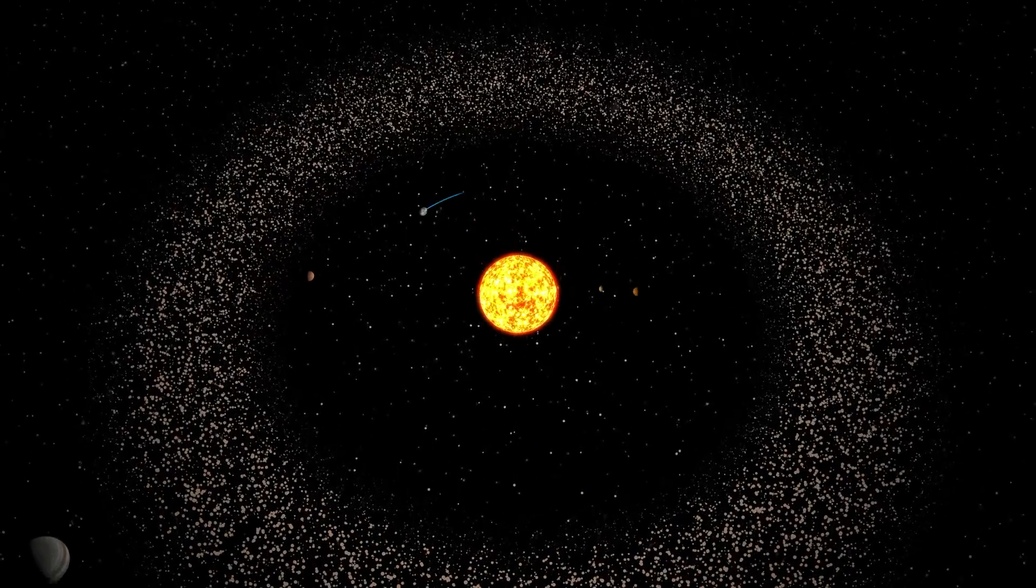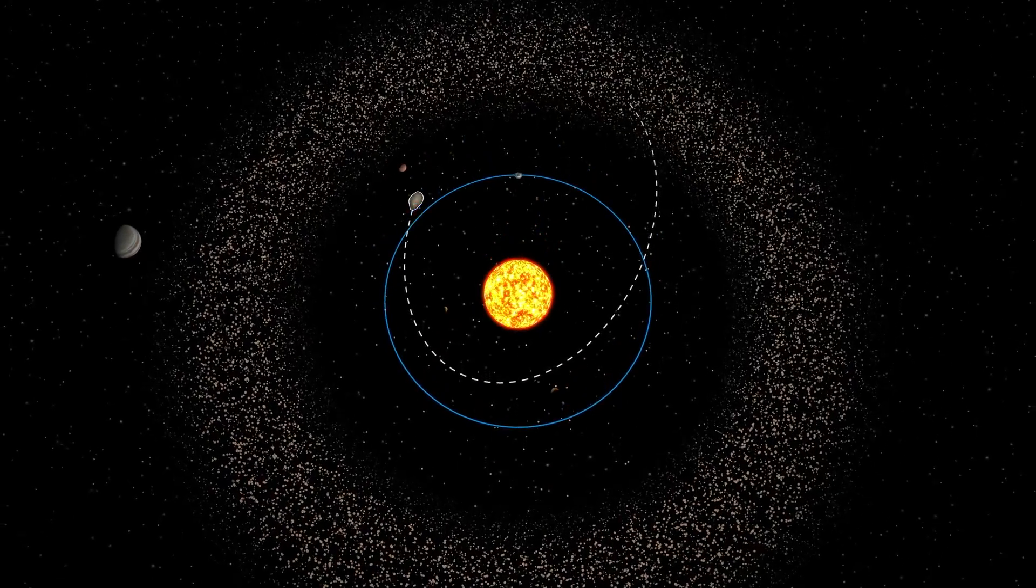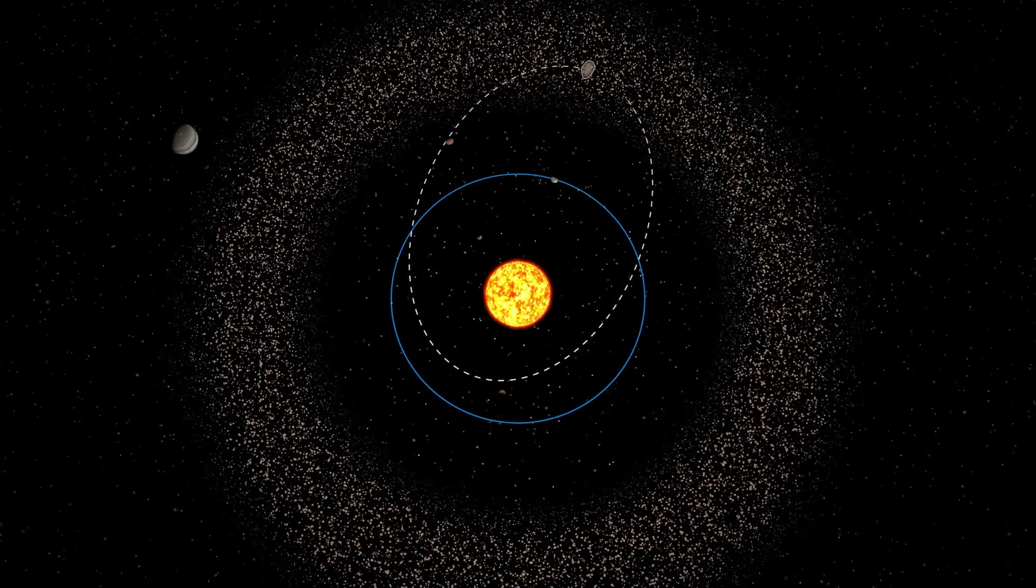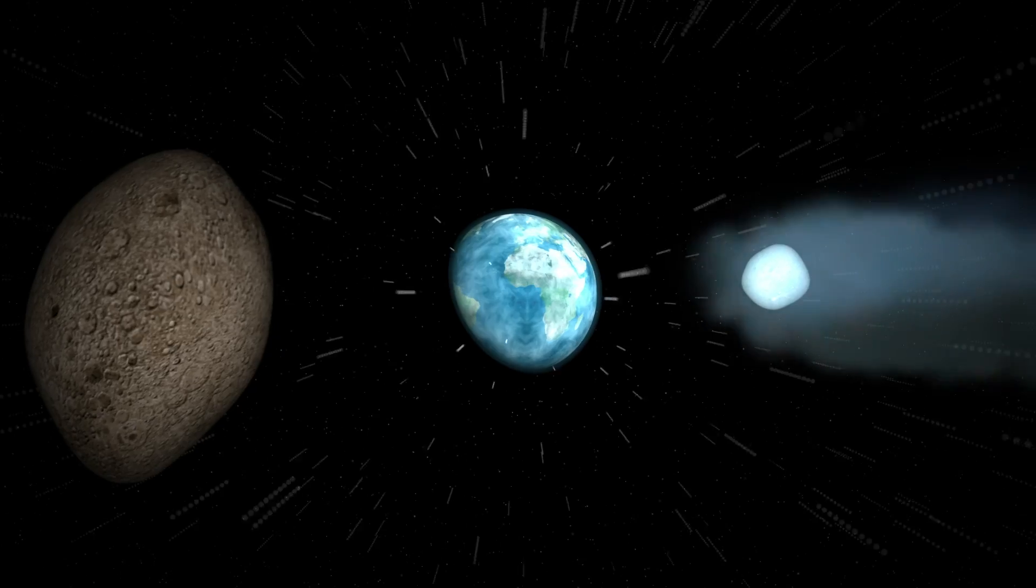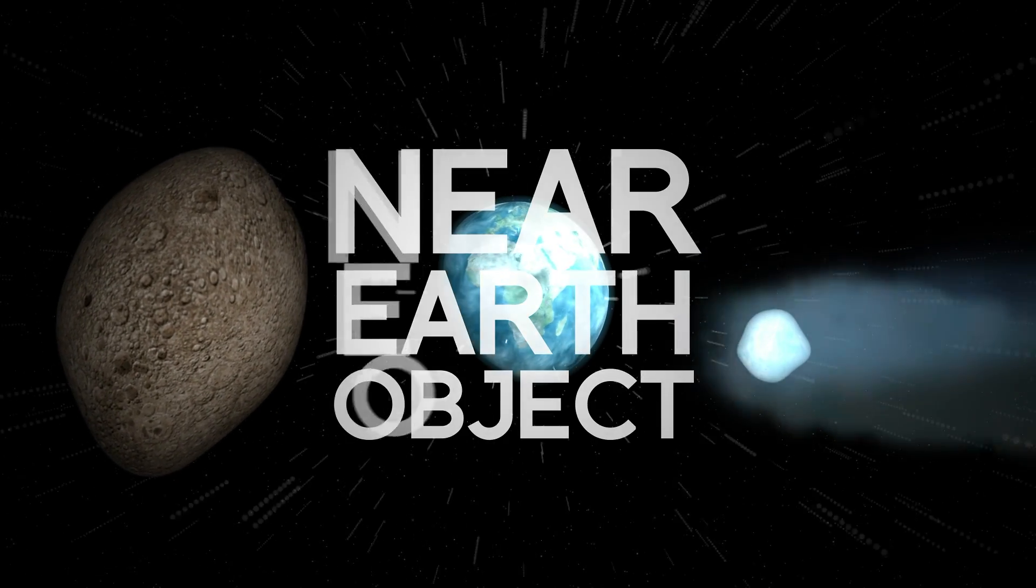They all have their orbits, but sometimes planetary disruptions can cause those orbits to change and intersect with our own. These asteroids and comets that pass worryingly close to Earth are called NEOs.